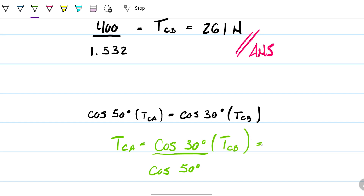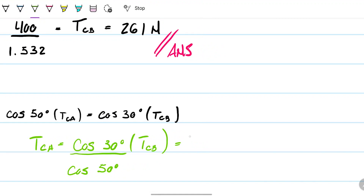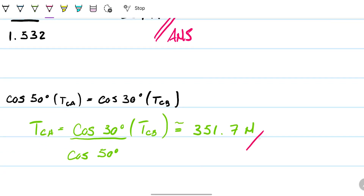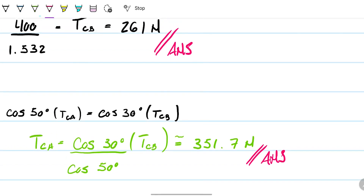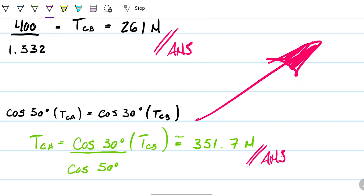We now know TCB is 261 newtons, so therefore if we don't approximate, we get approximately 351 newtons for TCA. If we don't approximate this value, then we get this value out of it in newtons. And therefore we match the numbers we had before when we did it the other way with the law of sines — we get the same result, but obviously it takes a little longer.